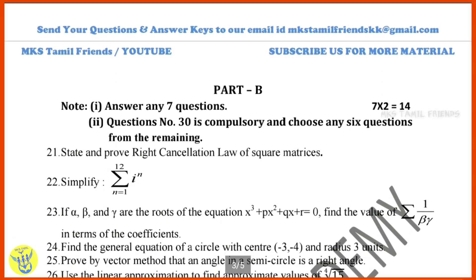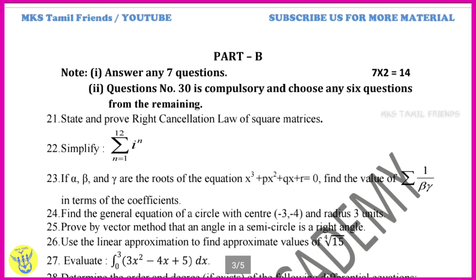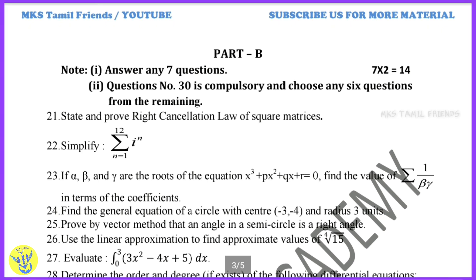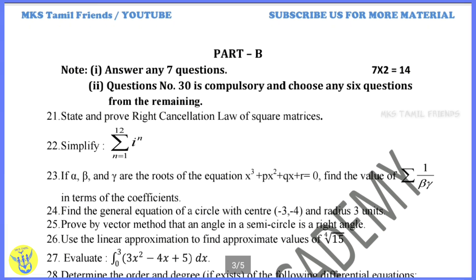Answer any 7 questions. Question number that is compulsory — choose 6 questions from the remaining. This is the first question you have to answer, that is question number 30. If you are interested in a couple of questions, you can answer some. It's easy to explain in Tamil.